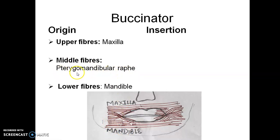So what is this raphae? From the pterygoid plate of the sphenoid bone towards the mandible there is one thickening of connective tissue which separates this buccinator from the superior constrictor of pharynx. That thickening of connective tissue is called as pterygomandibular raphae.